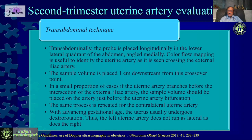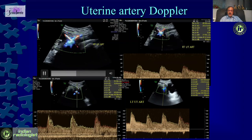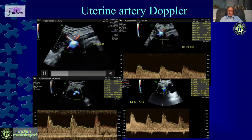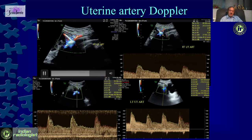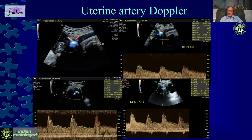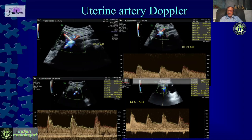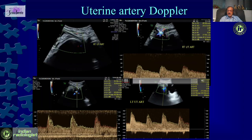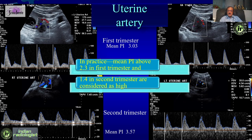It is important to look at uterine artery Doppler both in the first and second trimester. The technique can be transabdominal or transvaginal — we go to the midline, then laterally, identify the iliac artery, and then identify the uterine artery as it crosses. We sample it in an area where the uterine artery is straight, about one centimeter downstream as per guidelines, but don't go too peripheral to branches. We look at the spectral waveform and calculate the PI. We now look at only the mean PI — taking the mean from both sides. For practical purposes, if the mean PI is above 2.3 in the first trimester or above 1.4 in the second trimester, that is considered high.